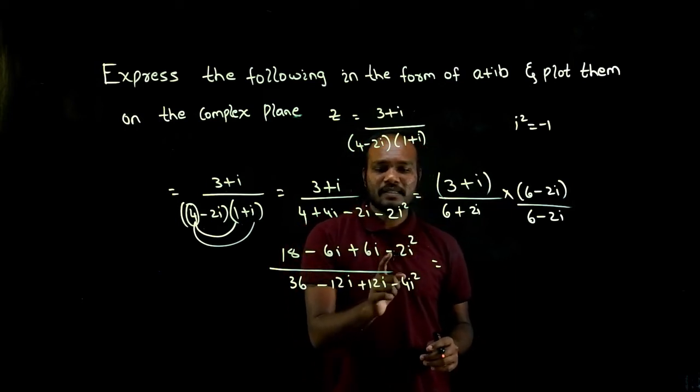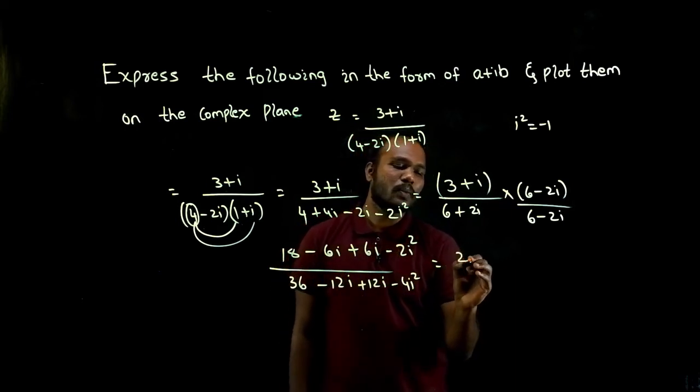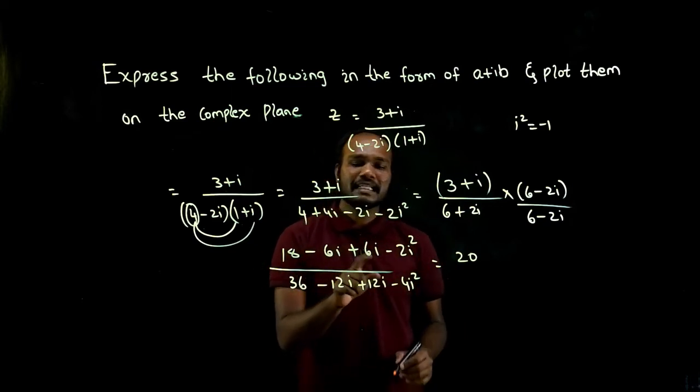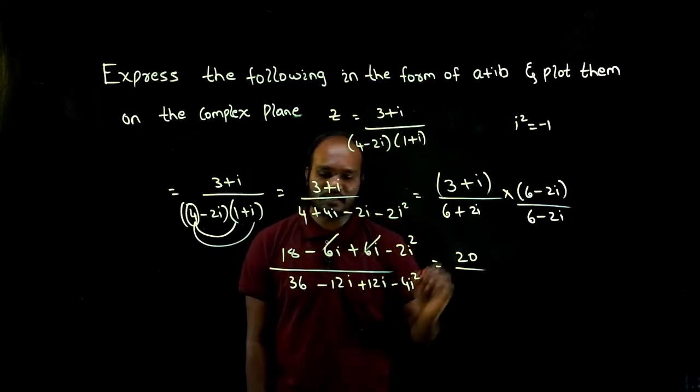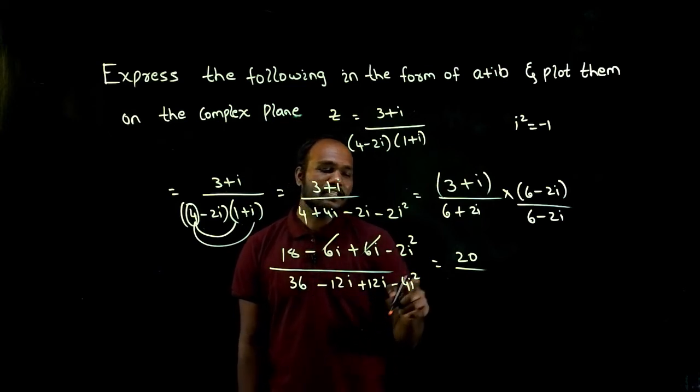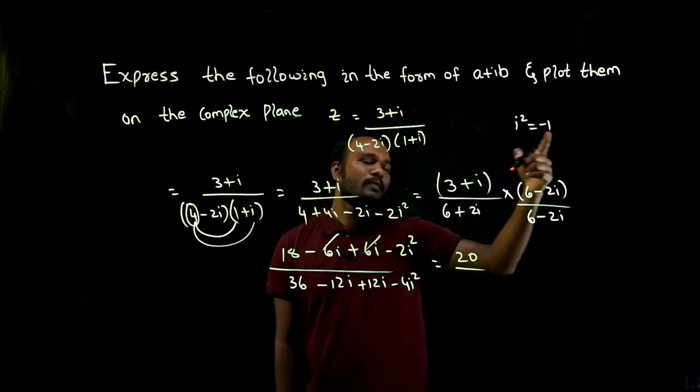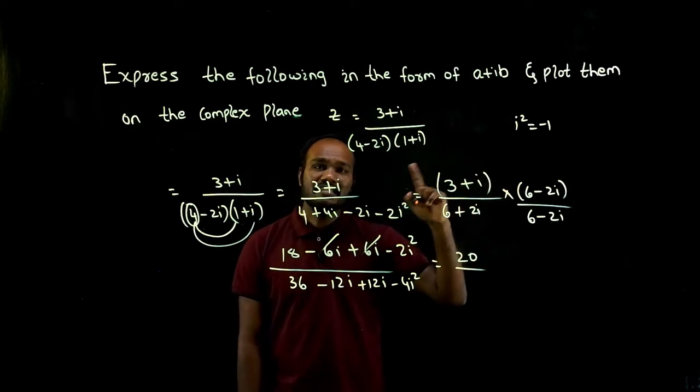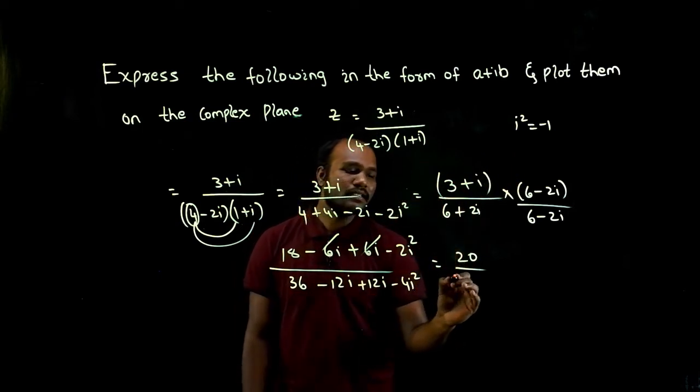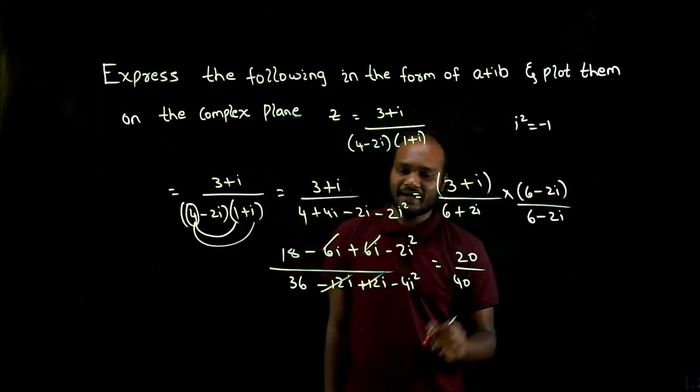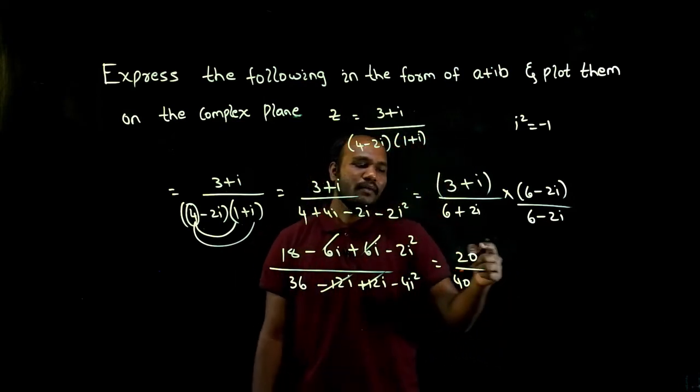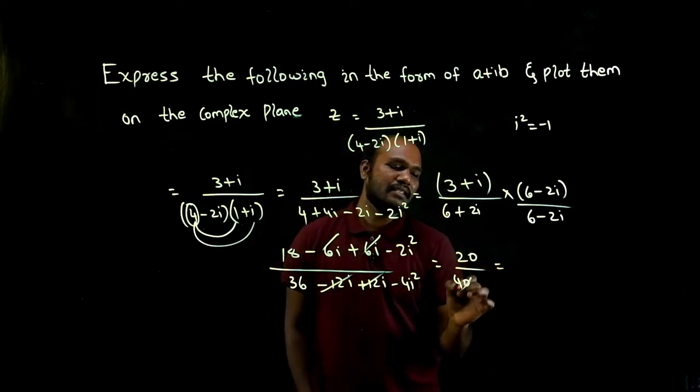i squared value is minus 1, so minus into minus is plus, so 18 plus 2 is 20. Minus 6i plus 6i get cancelled. In the denominator, 36 minus into plus is minus, because i squared value is minus 1. So minus 4 into minus 1 is plus 4, plus 36 is 40. 12i minus 12i get cancelled.